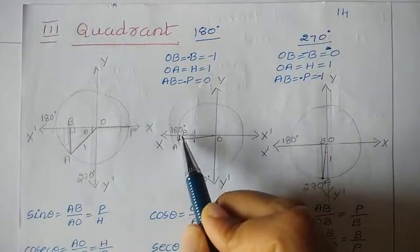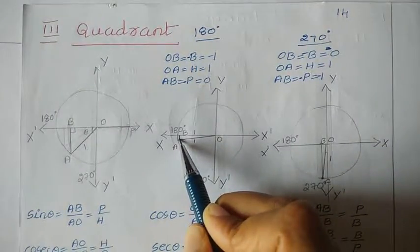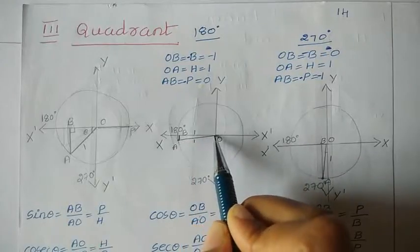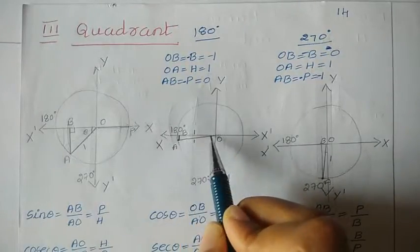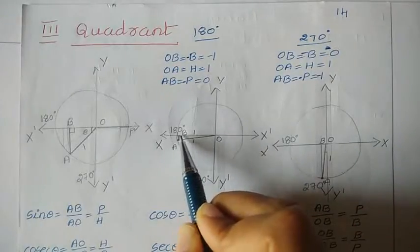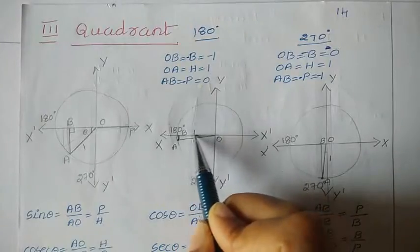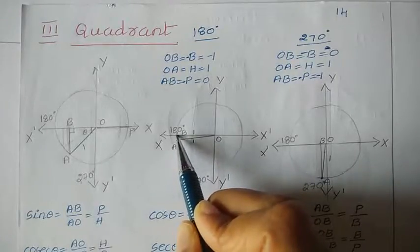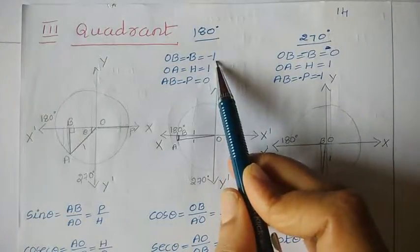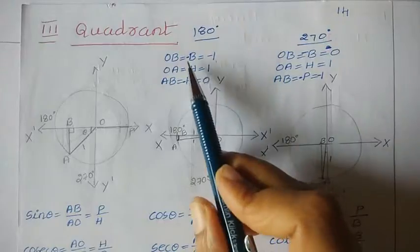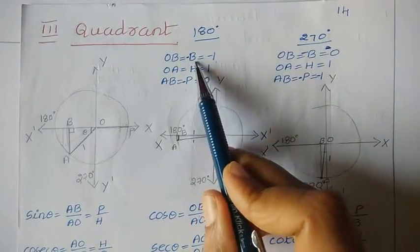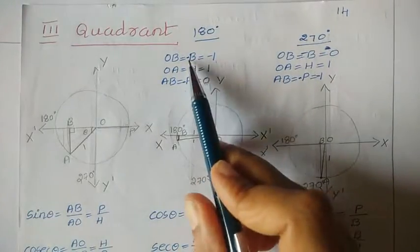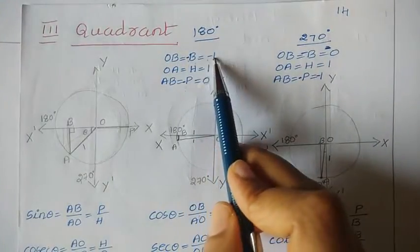At 180 degrees, the perpendicular is the smallest value and the base is the largest value. When the line reaches 180 degrees, the base is nothing but the radius of the circle. The maximum value of base is obtained and perpendicular is equal to 0. So base is equal to 1 and perpendicular is equal to 0. But here I have taken a negative sign because the base is located on the negative x-axis, so base is minus 1.